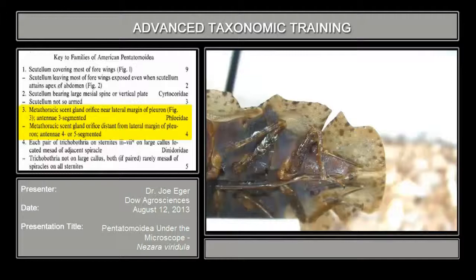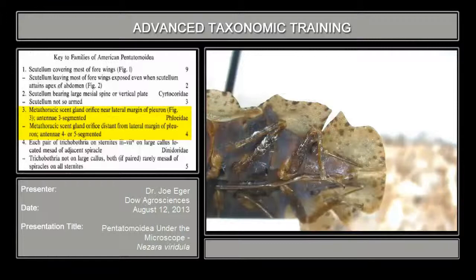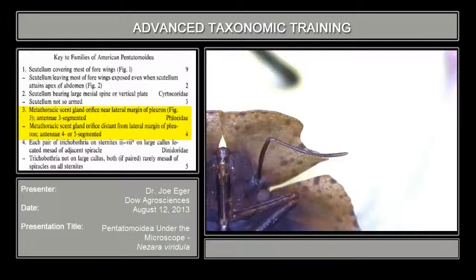Couplet number three: your choices are metathoracic scent gland orifice near the lateral margin of the pleuron, or orifice distant from the lateral margin. This separates the phloaeids from other bugs. You can see the orifice is right here — it doesn't have much of a canal or evaporatorium, but it is located very near the lateral margin of the segment. This is actually expanded plates out here, but the orifice is near the lateral margin, so this is a phloaeid. The other odd character with phloaeids is that the antennae are three-segmented, whereas our bug has a five-segmented antenna.